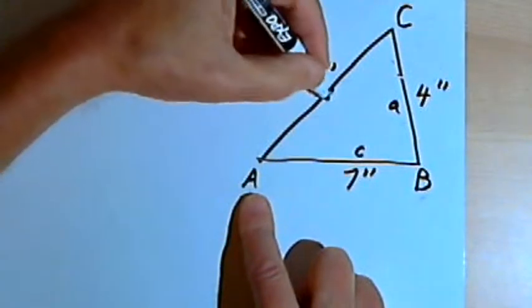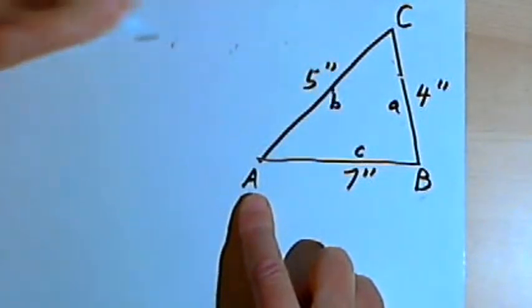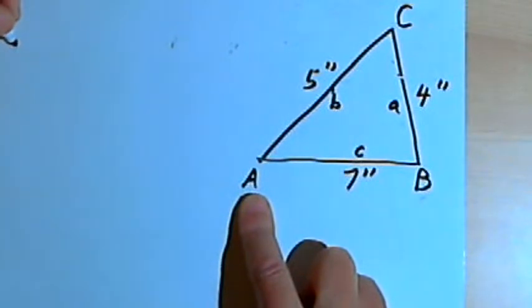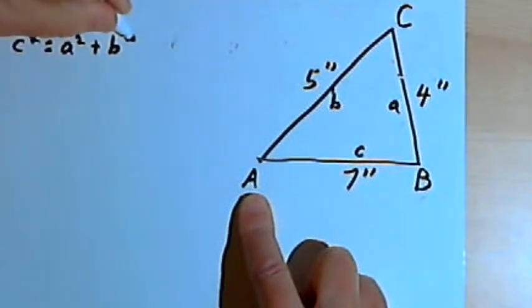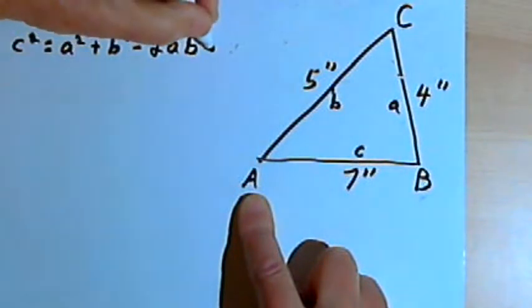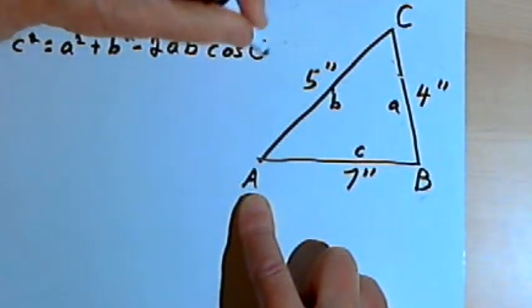And the side opposite angle b will be small b. Now let's write that formula that was c-squared equals a-squared plus b-squared minus 2 times a times b times the cosine of c.